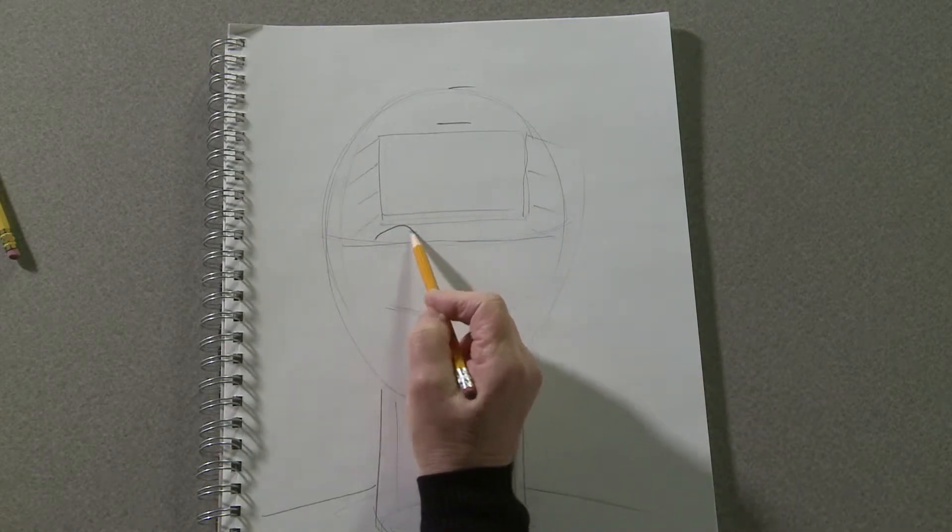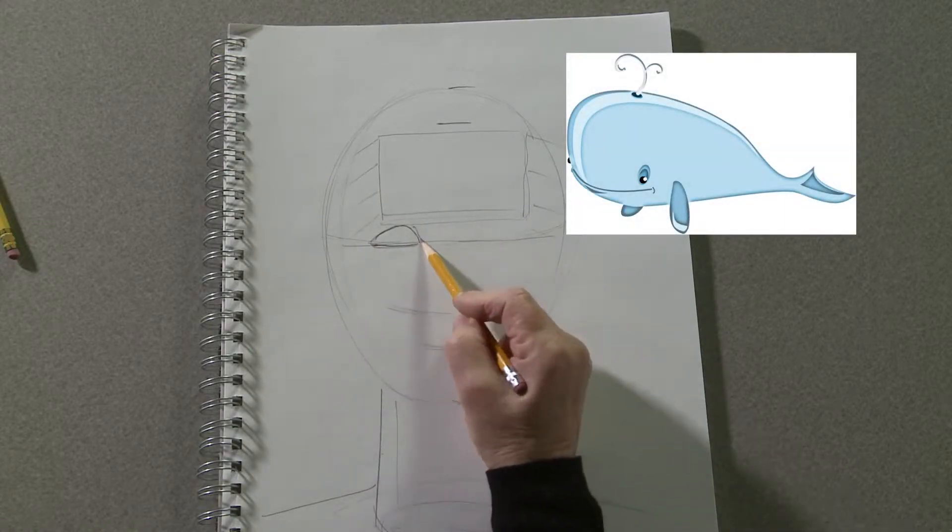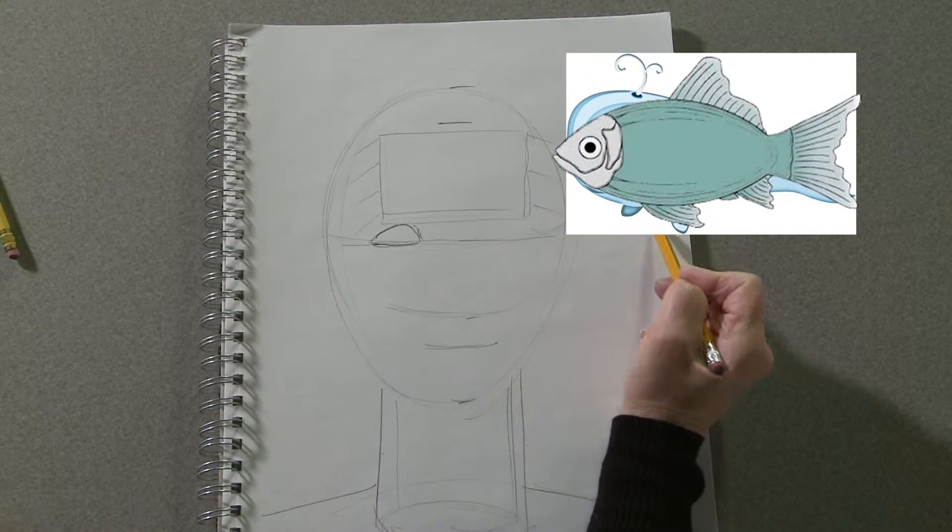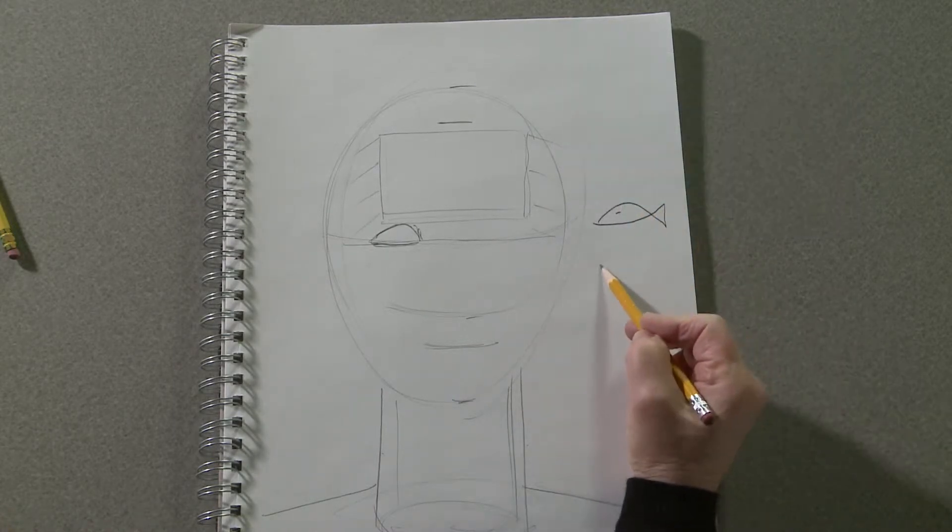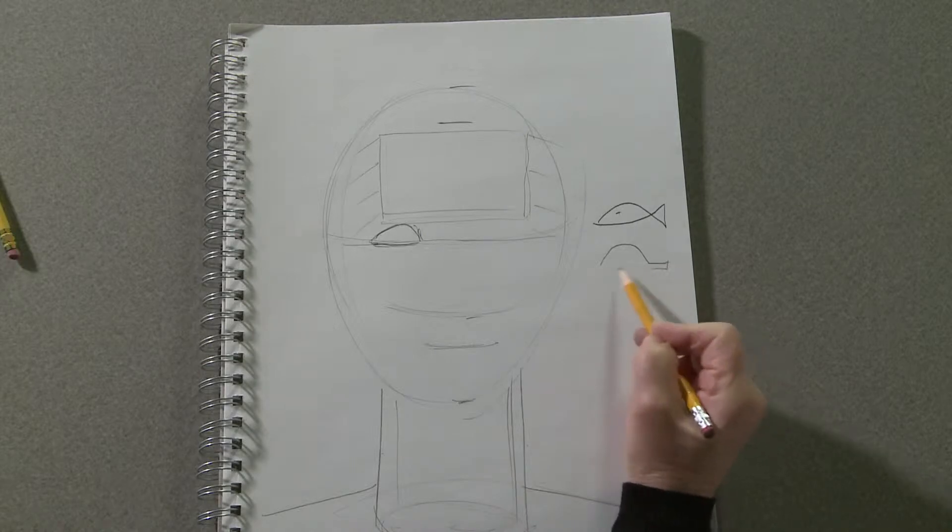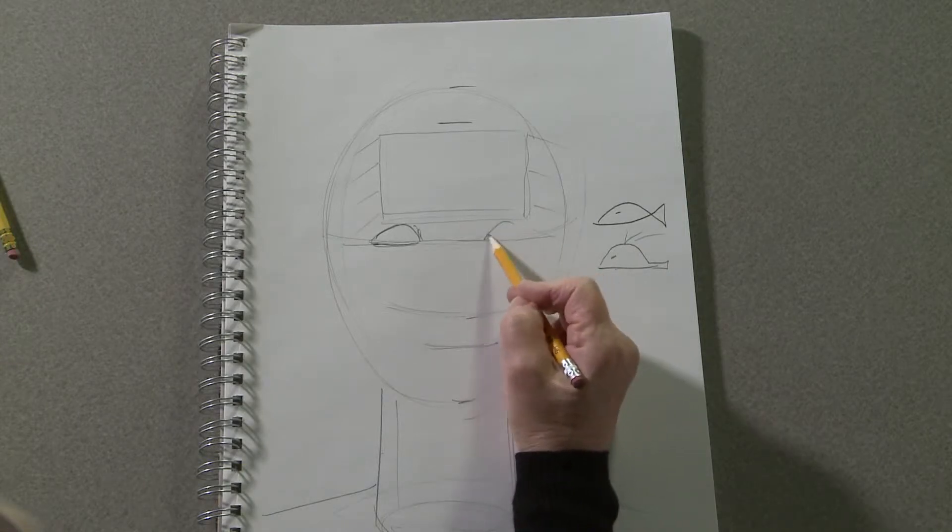We're going to draw shapes that look more like whales than fish. So you don't want a fish, you want a whale. So it's flatter on the bottom and more rounded on the top.